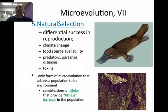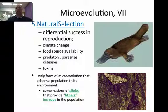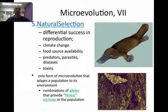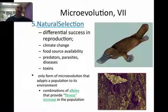The last of the five agents is natural selection, which is simply differential success in reproduction. It's determined by the environment and what happens — like climate change, availability of food, predators, prey, toxins. It's a combination of alleles that provides a fitness increase in the population. For example, the pepper moths: at one time there were a higher percentage of white pepper moths than black because the bark was predominantly white. After the Industrial Revolution, the bark of the trees became dark, so the allele frequency shifted — now you have a higher number of black pepper moths than white.